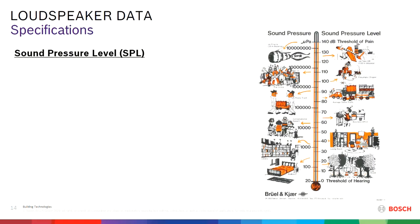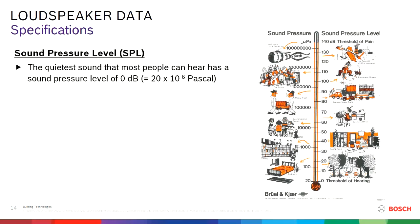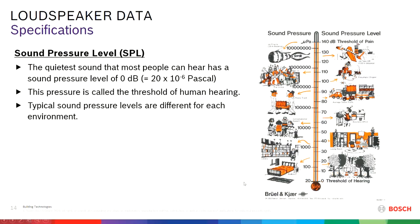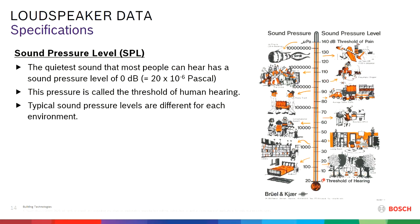Sound pressure level: the threshold of hearing is 0 dB, which is 20 micropascals. Below this level you cannot hear anything anymore — most people cannot. That is what I call the threshold of human hearing. Different environments have typical sound pressure levels; for instance, in an office the sound pressure will be about 65 dB. It's important to know for your application what the sound levels are, because the choice of your loudspeaker depends on the environment and how much sound is already present there.